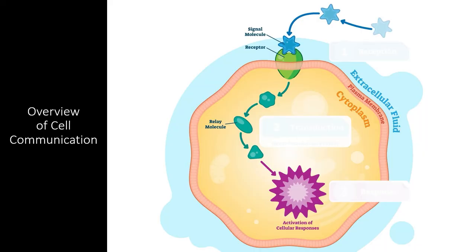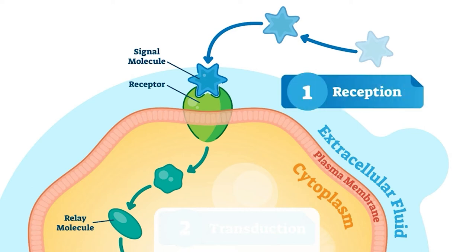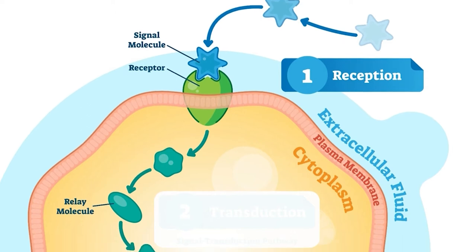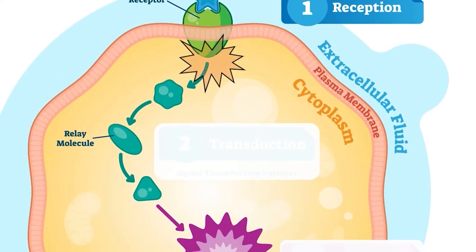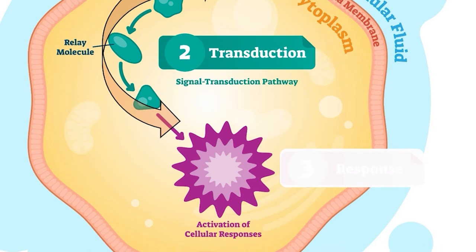The process of a signal activating a certain response in another cell is called signal transduction. Most signals start when a receptor protein on the surface of the cell receives a signal — either a chemical or a physical stimulus like light, touch, or sound waves. Each receptor protein has evolved to receive a very specific signal known as a ligand. Once the receptor receives the signal, it catalyzes a reaction inside the cell, starting a cascade of other reactions — a process known as signal transduction — which eventually leads to a cellular response.